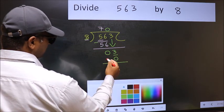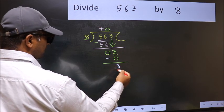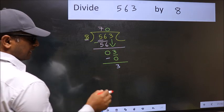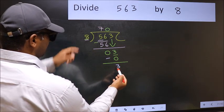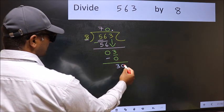Now we should subtract. 3 minus 0 is 3. Over here, we did not bring any number down, and 3 is smaller than 8. So now you can put a dot and take 0.